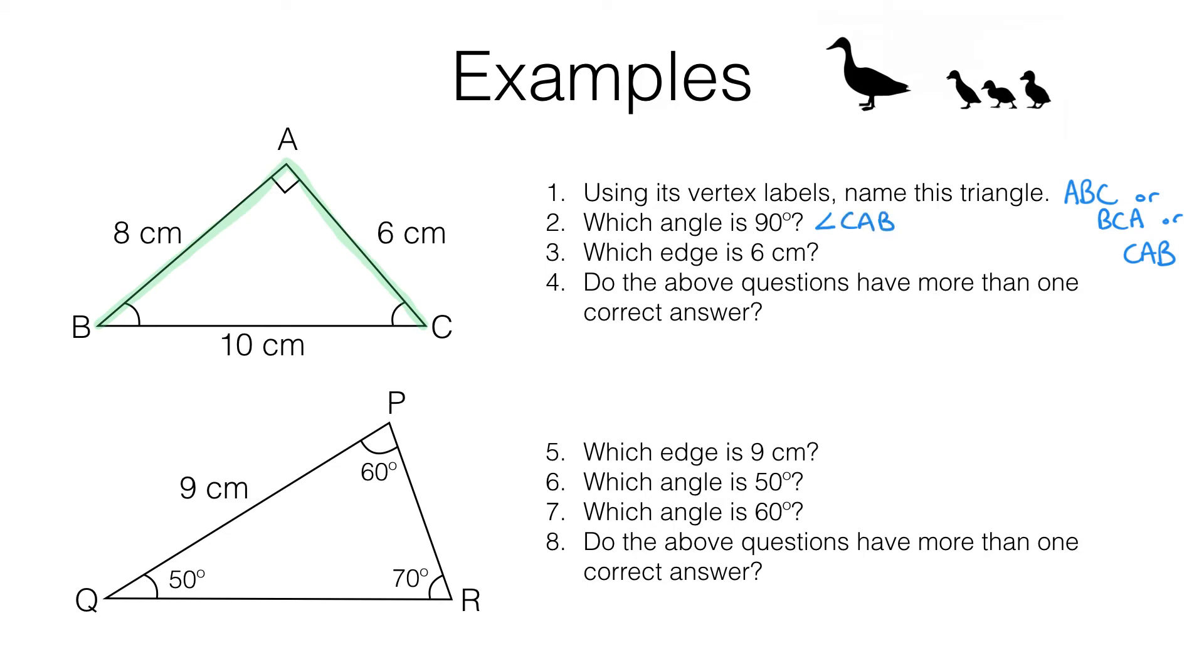Now normally we like going anti-clockwise around a shape. So CAB is correct. Some people think you can call this angle here BAC but it's probably safer just to work anti-clockwise. The important thing to note is that the vertex where the angle actually is, is the one in the middle of your name. So CAB. A is where the angle actually is located.